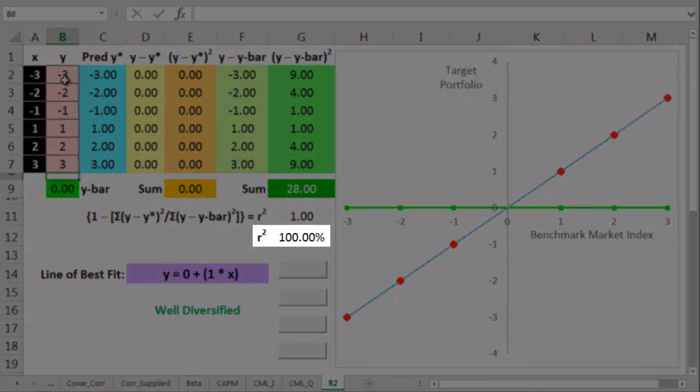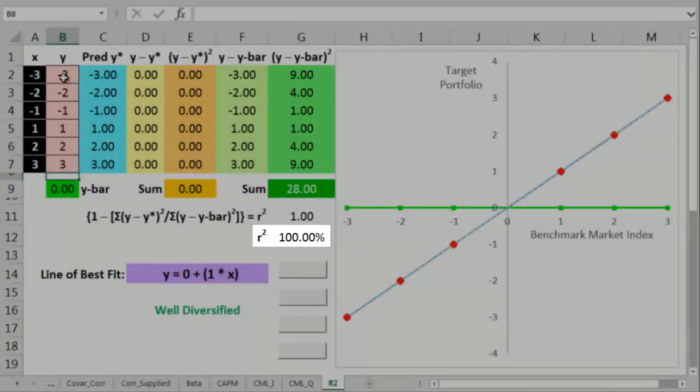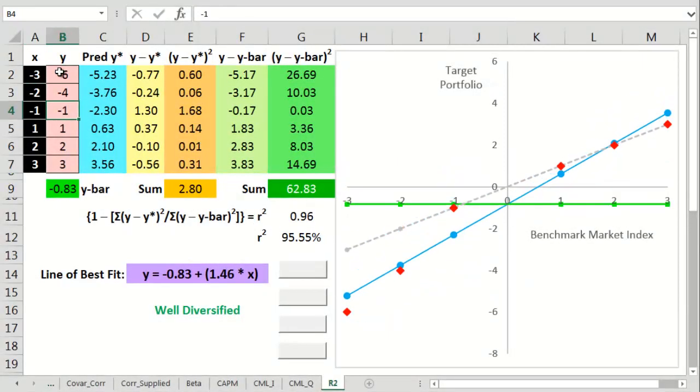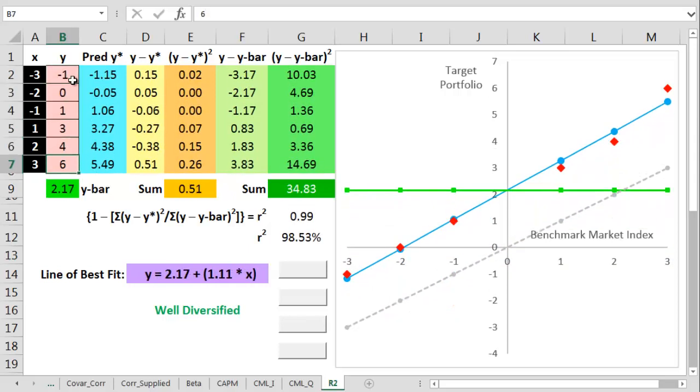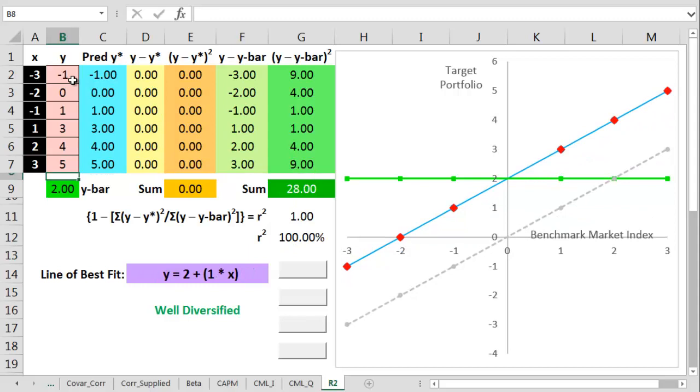You can see I've now got an r squared figure of exactly 100%. But I can get to that by even doubling the target against the benchmark. r squared still remains 100. Or I can set the target to always give us 2 more than the benchmark. Again, r squared's still 100.